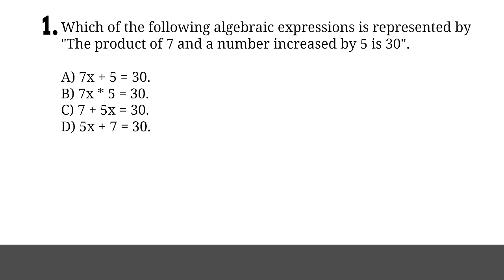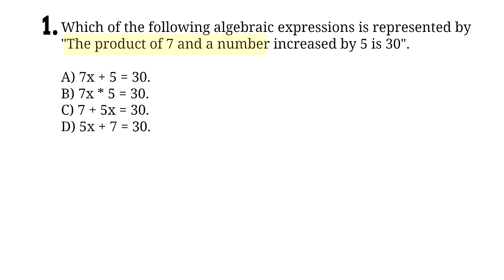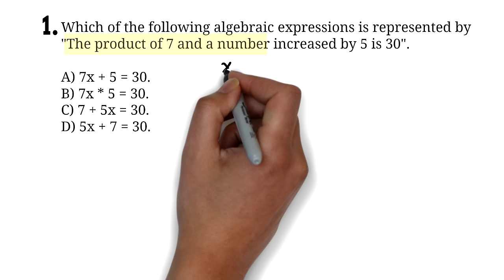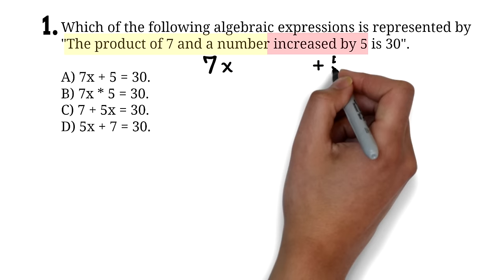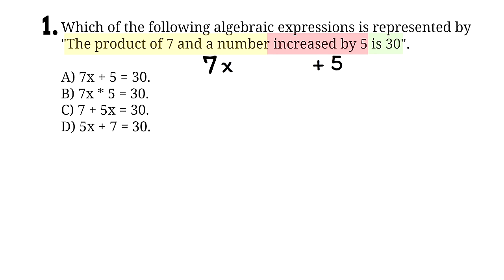The product of 7 and a number — here, product implies multiplication. If we let a number be represented by a variable, say x, this part of the phrase translates to 7 times x, which is the same as 7x. Increased by 5 — increased by implies addition, so we add 5 to it. Is 30 — in mathematical expressions, is implies equality, so is 30 means equals 30. Therefore, the correct answer is A: 7x plus 5 equals 30.